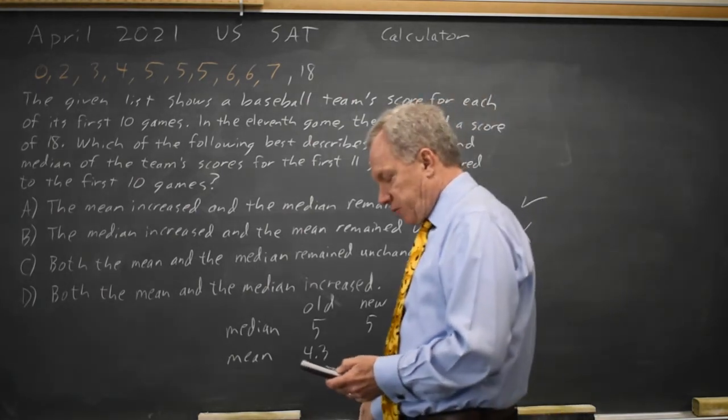If you take that total of 43 and add 18 more points and divide by 11, you get a new mean of 5.5.